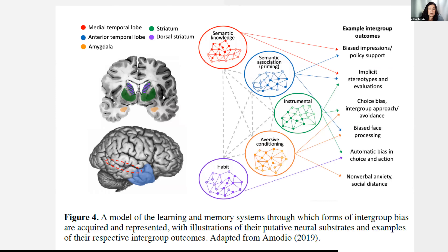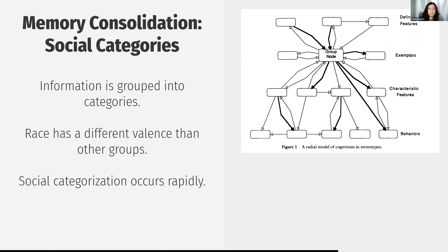This social categorization occurs really, really rapidly — really before we've even processed what we're seeing, we have already categorized what we're looking at in terms of social status, gender, sex, and power. We tend to have a kind of radial grouping, just like with our memory categorization and schemas. We look at something, analyze it, group it, and see if it fits into the groups we've already made in our heads. This is basically what stereotyping is.